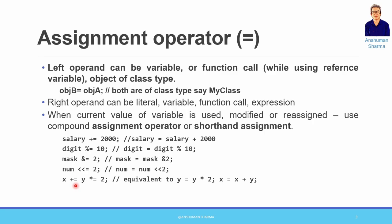An important thing to remember is that when an assignment operator is evaluated, it is evaluated right to left — that is its associativity. So if we have multiple assignment operators, like 'x += y *= 2', the right-most expression 'y = y * 2' is evaluated first, then its result is added into x. This is because unlike most operators which have left-to-right associativity, the assignment operator has right-to-left associativity — meaning: evaluate the right-hand side first, then move to the left.